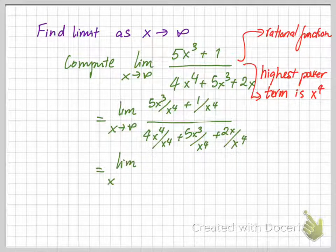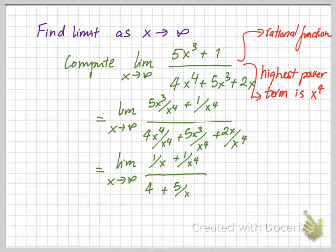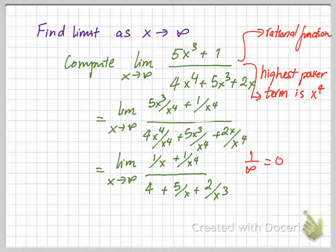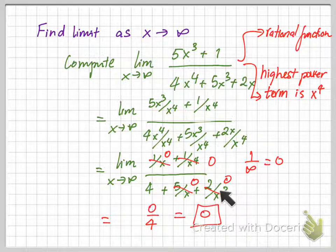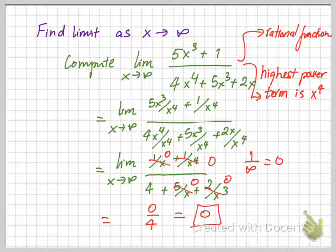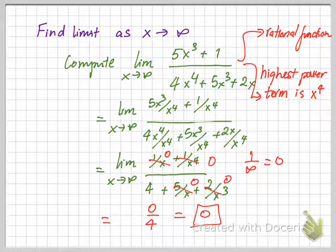Now it's time to plug infinity into x. After plugging in infinity and simplifying terms 1, 2, 3, and 4, the result is zero in the numerator and 4 in the denominator. Thus, the limit of this function is zero. You can see that the power of the denominator is greater than the power of the numerator, which gives this result.